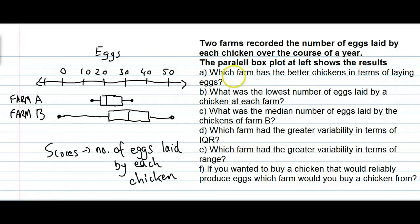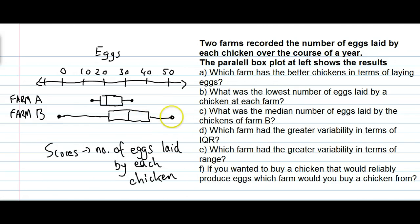Question A: which farm has the better chickens in terms of laying eggs — farm A or farm B? It's very clear from looking at this parallel box plot that farm B has the better egg-laying chickens. The median is higher, which is a strong indication, and the data is bunched in the interquartile range at a higher place than farm A. Additionally, the maximum number of eggs laid by the chickens at farm B is much greater than the maximum for farm A. All of those things point towards farm B being the better farm.